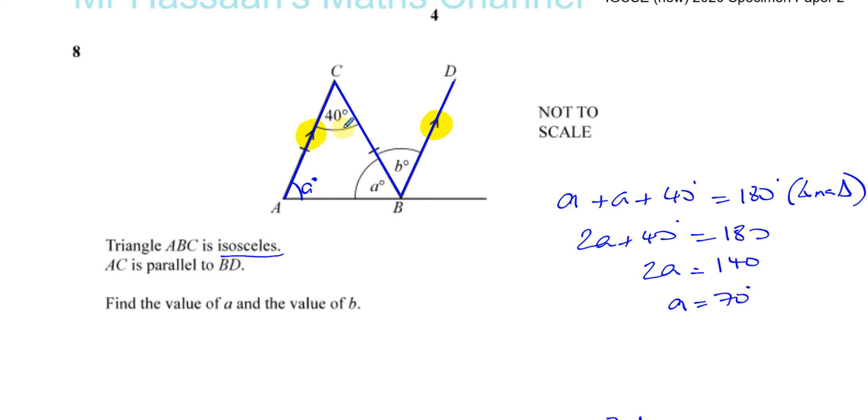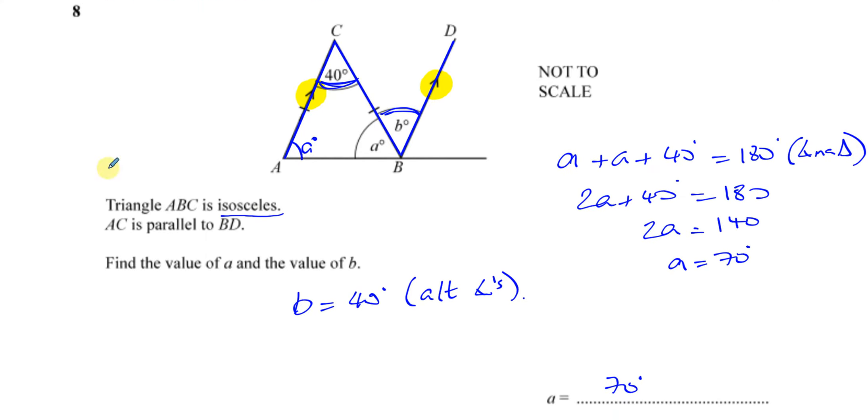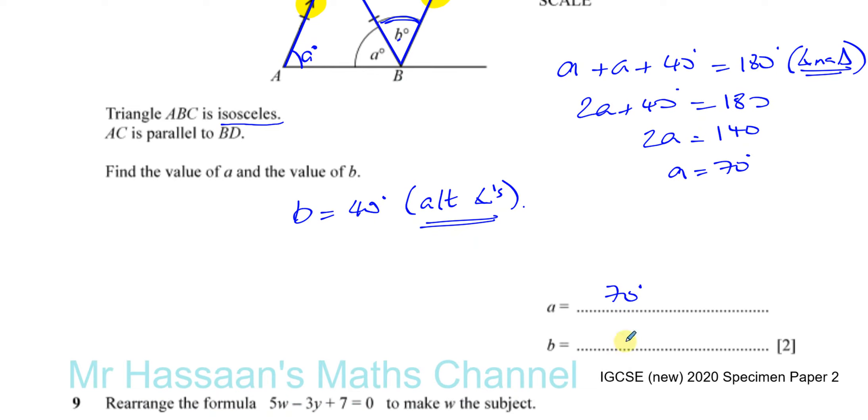This angle and that angle, they are called alternate angles. So we can say that B equals 40 degrees. You can write alternate angles. You don't actually have to write the reason in this particular question, but sometimes they do ask for the reason. So writing it in this shorthand form is perfectly fine. B and 40 are the same. So B equals 40 degrees.